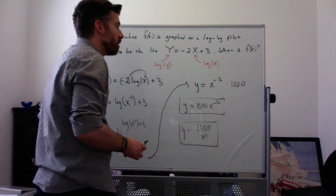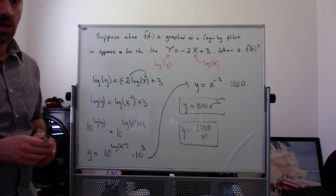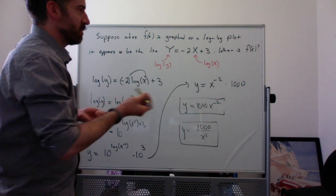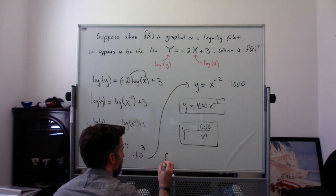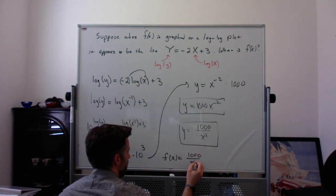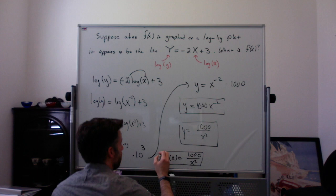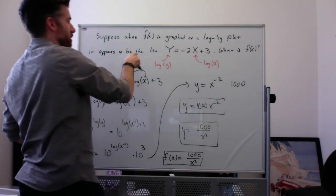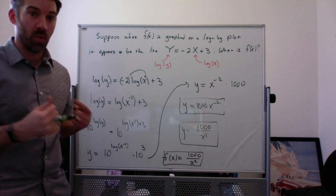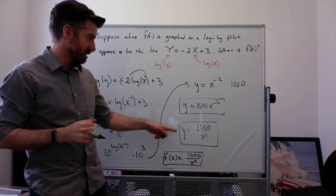The thing to remember is that if you have a log-log plot that is linear, your original function—I should actually write the original function f(x) = 1000/x^2 or 1000x^-2—but if you have a log-log plot that appears to be a linear graph, the original function is some power function where it is x to some power.